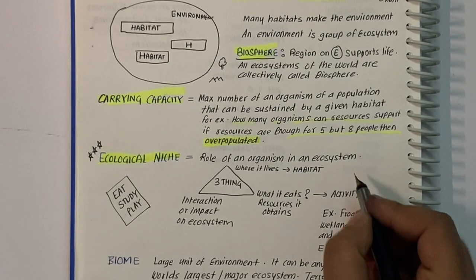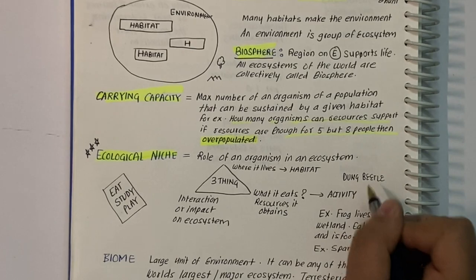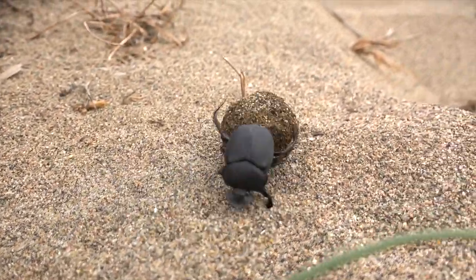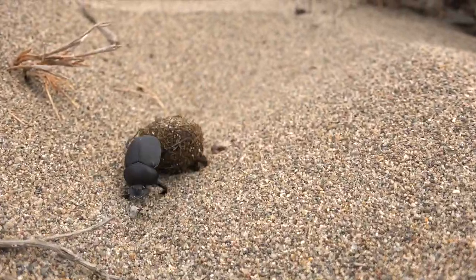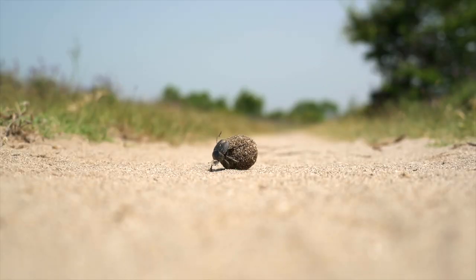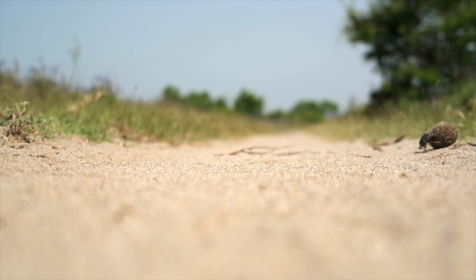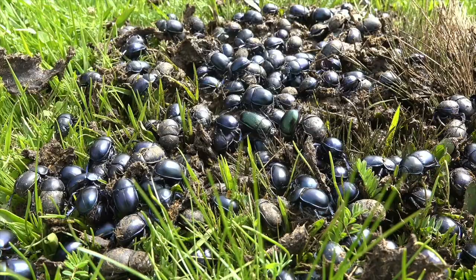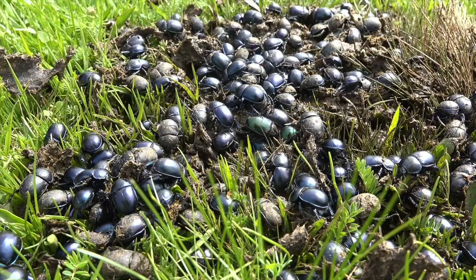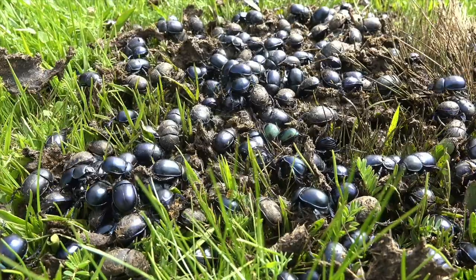Dung beetles eat dung, which is plentiful in almost all biomes. They make a ball out of it, feed on it, and females lay eggs on that ball. By doing so, they provide nutrition to soil. This is their functional role in the environment.